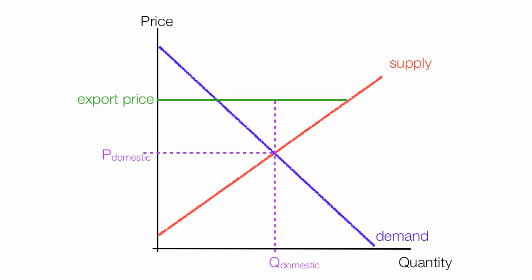The quantity supplied is the total quantity supplied, including exports and domestic consumption. Domestic consumption is that line right there. And the difference between quantity supplied and domestic consumption is the exports.